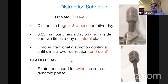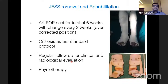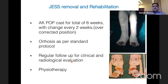The fixator is maintained for twice the duration of the dynamic phase — so if distraction takes 25 days, you keep it double that time. This is especially important in syndromic feet. Once JESS is removed, a POP cast above knee is applied for a total of six weeks, changed every two weeks. Then orthosis is prescribed per standard protocol with regular follow-up and physiotherapy manipulation taught to mothers.